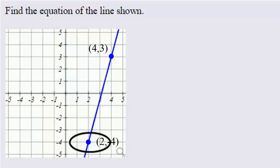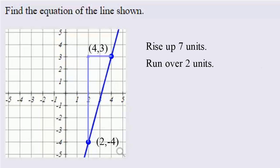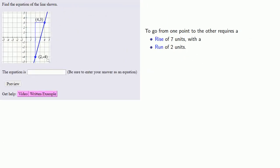To go from this point to this point, we have to rise up by seven units, and then we have to run horizontally by two units. So the graph goes through the points 4, 3 and 2, negative 4, and has slope 7 halves.